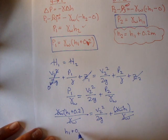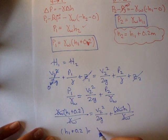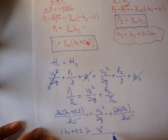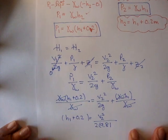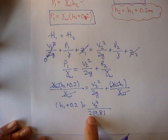And here gamma of water, gamma of water cancel out. The gamma of water here and here cancel out. So we're left with h1 plus 0.2 is equal to v2 squared over 2 times gravity.